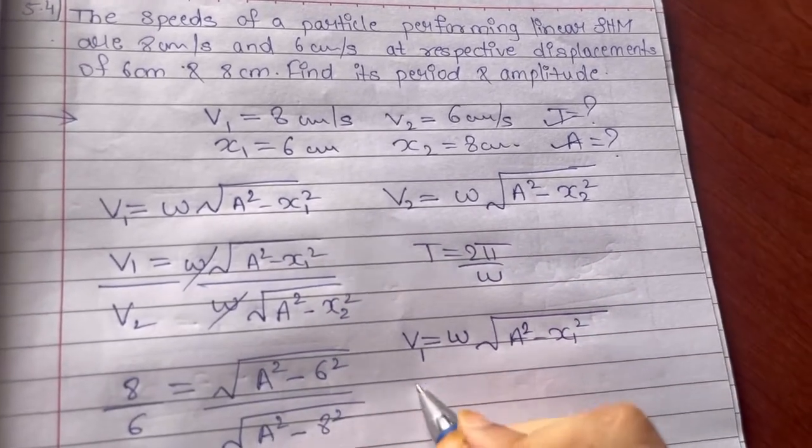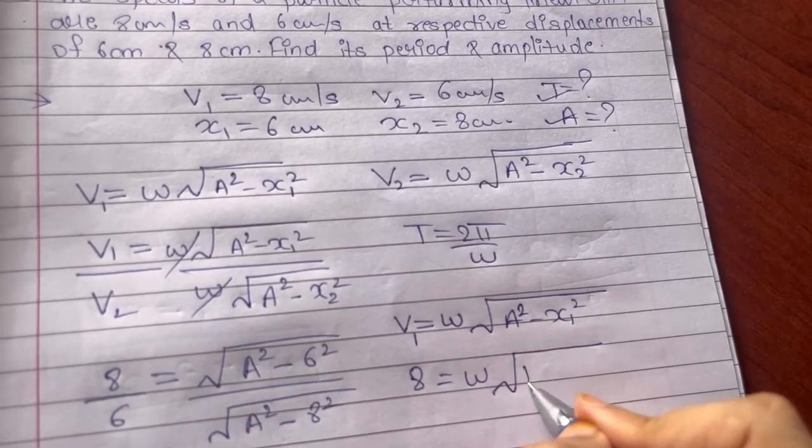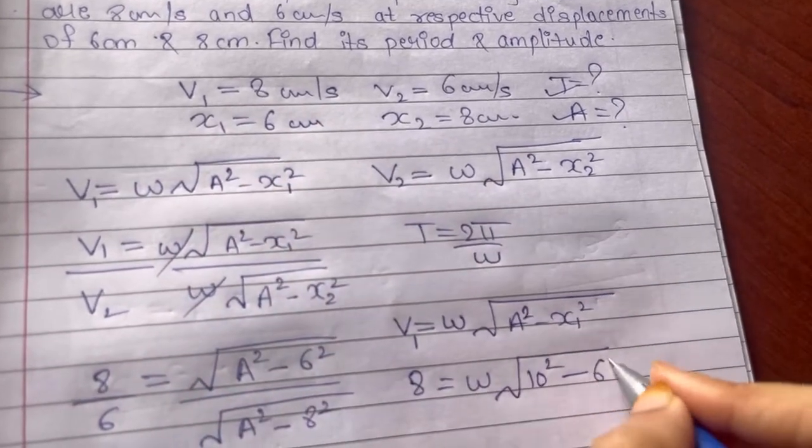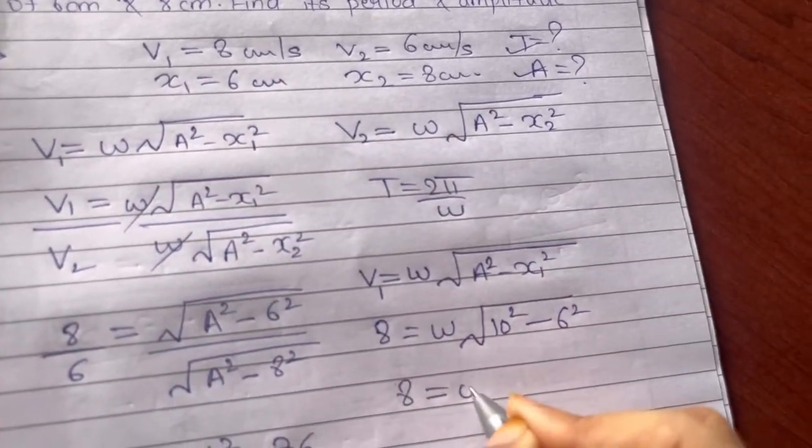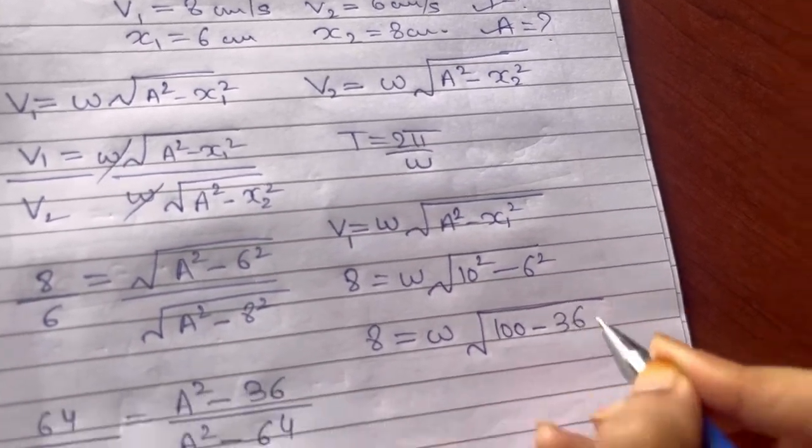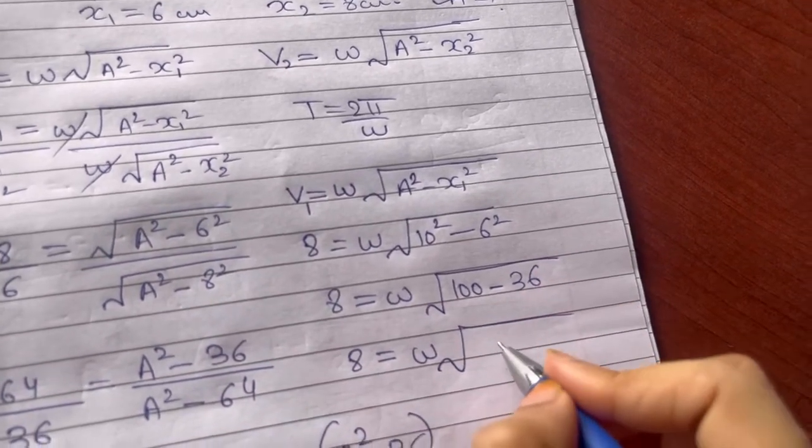V1 is 8, omega is unknown. A square, now we have the value of A, that is 10. So 10 square. X1 is 6, so 6 square. So it is 8 equals omega, 10 square is 100 minus 6 square is 36. So 8 is equal to omega times 100 minus 36 is 64.